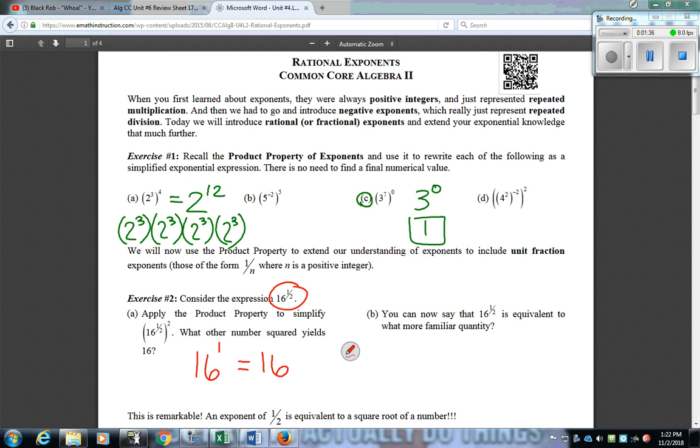Now you could say that if I had 16 to the 1 half power and I was to put that in a calculator, it would end up being the number 4. So 16 to the 1 half power equals the whole number 4. For part B, it says you could see that 16 to the 1 half power is equivalent to what more familiar quantity? Well, we know 16 to the 1 half power is 4, which would be the same as the square root of 16.